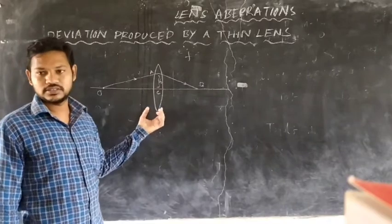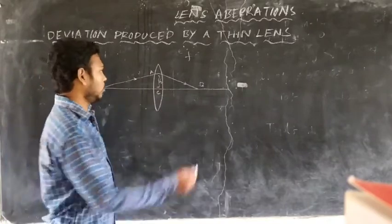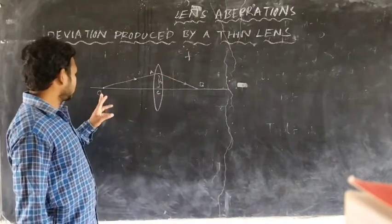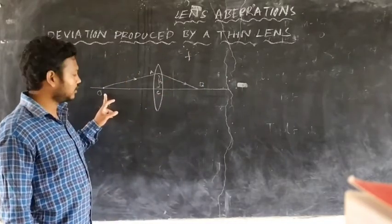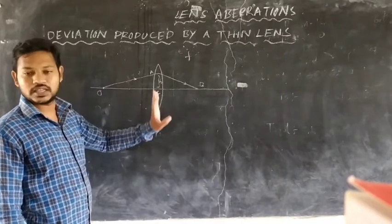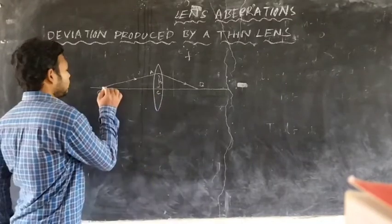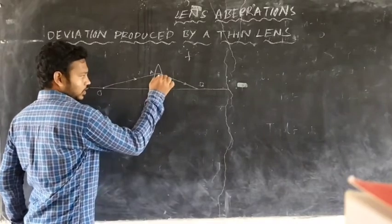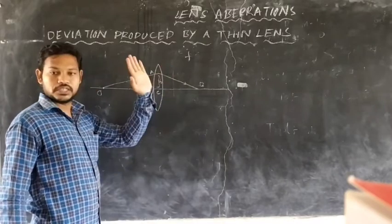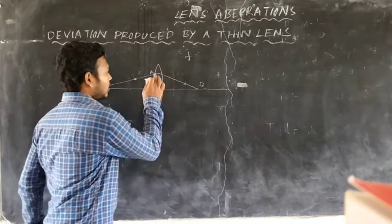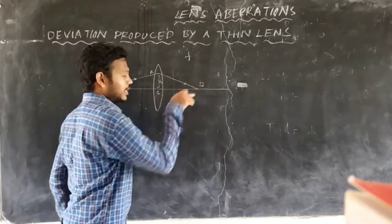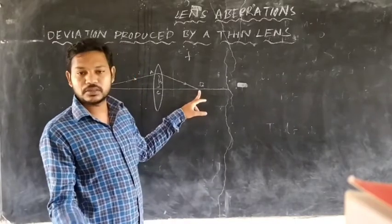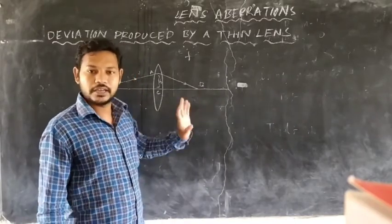Let us take a thin concave lens. The focal length of the lens is here. The point object is taken on the principal axis of the lens. The incident light rays hit the lens at a height H from the principal axis. After refracting, the light rays travel in the direction of A-V. The image is formed on the principal axis at point B.